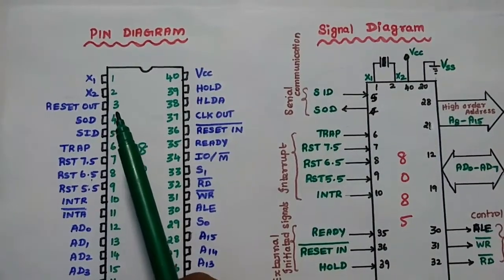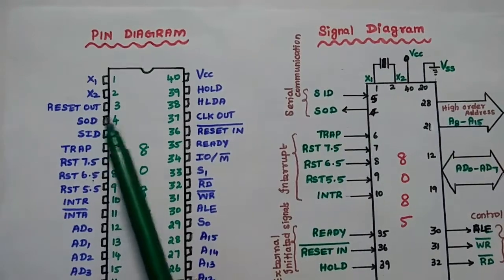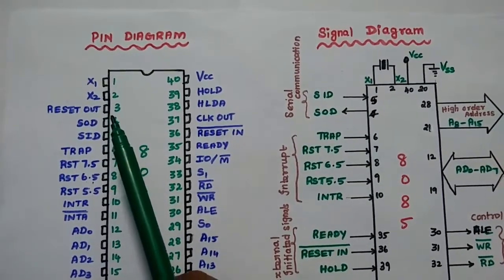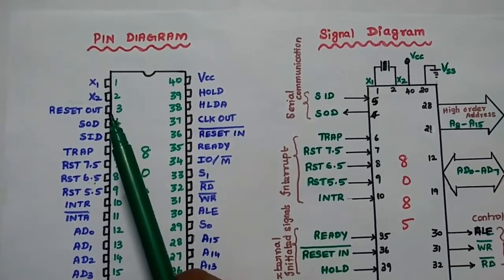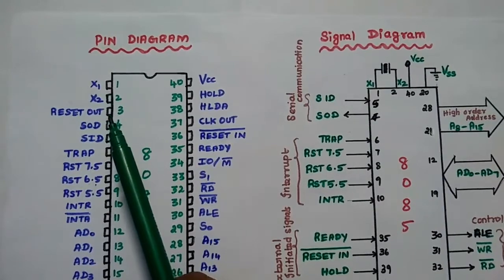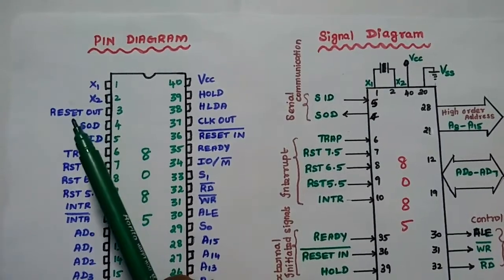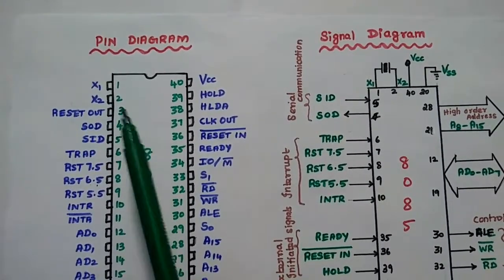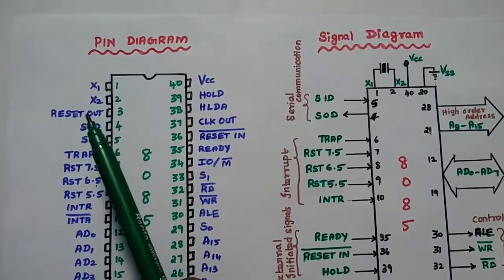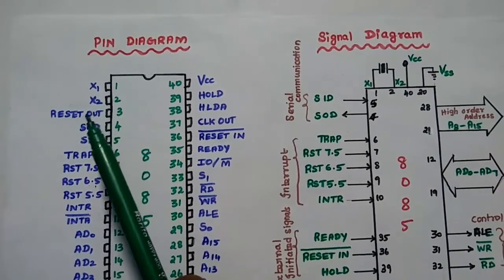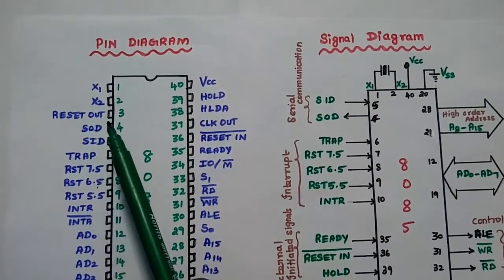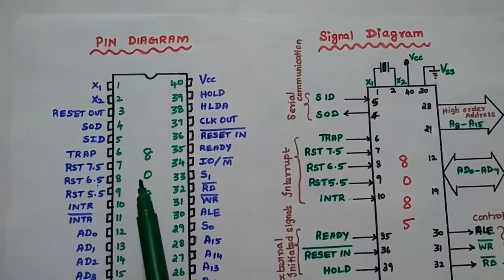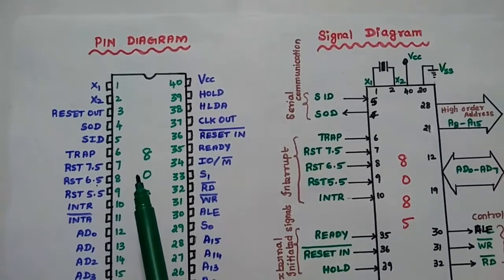The third pin is Reset Out. This signal is used to reset all the externally connected devices to this microprocessor. That is what Reset Out does — it resets the outside devices connected with this microprocessor.